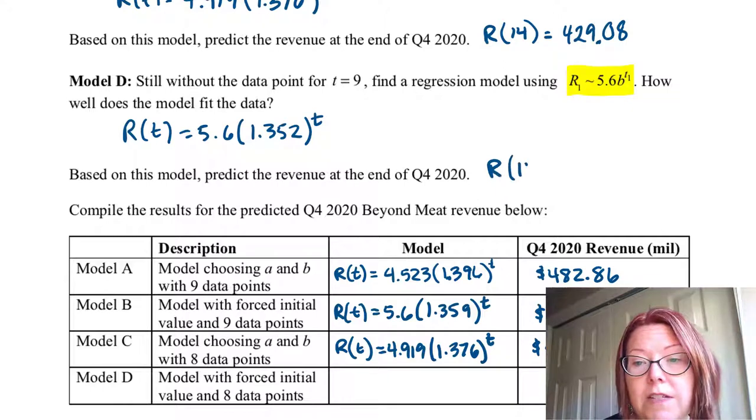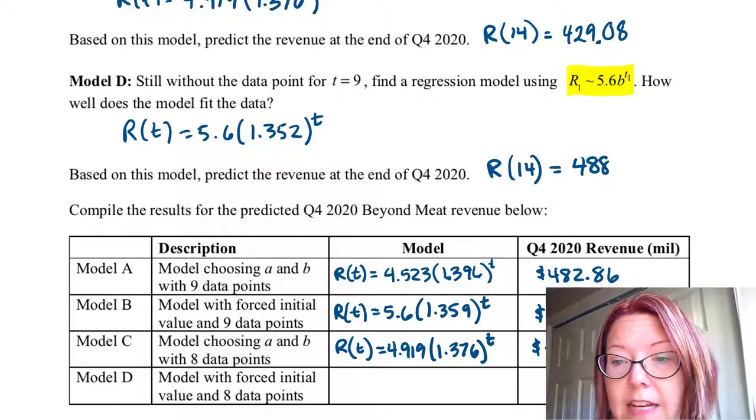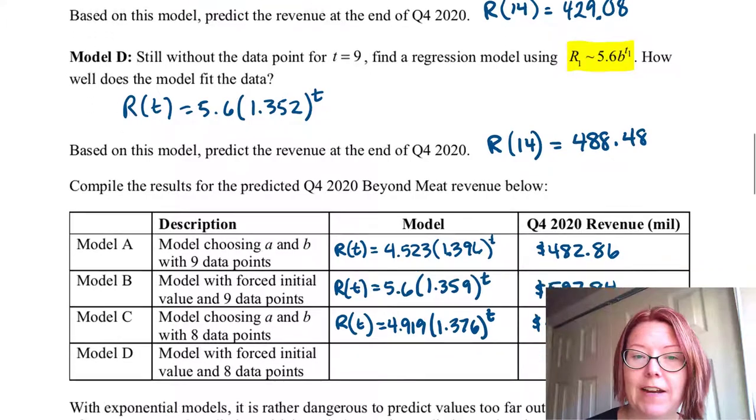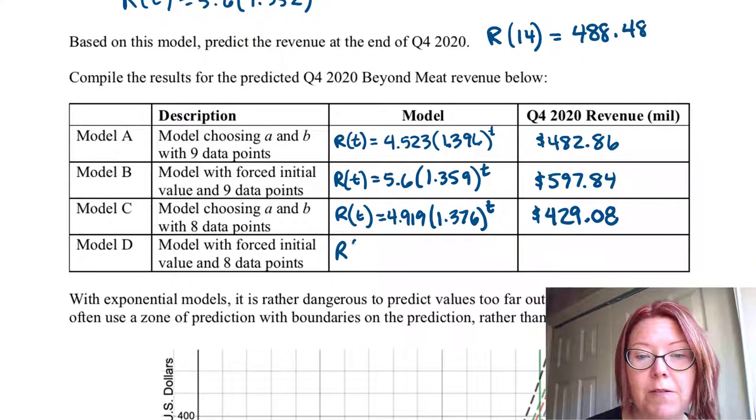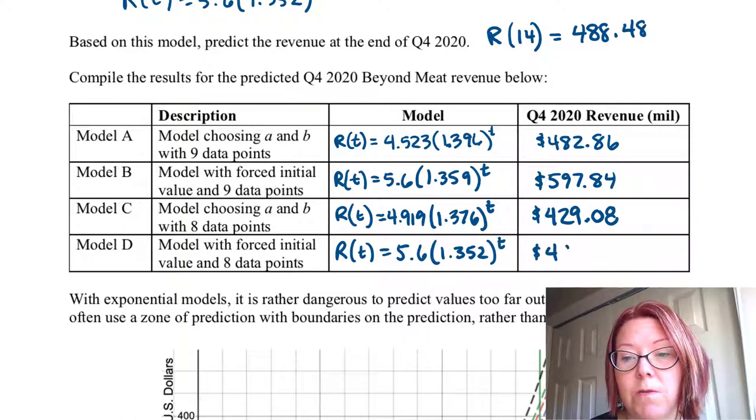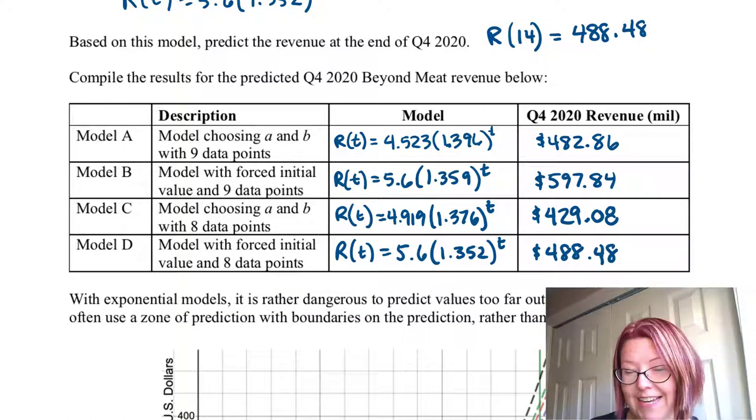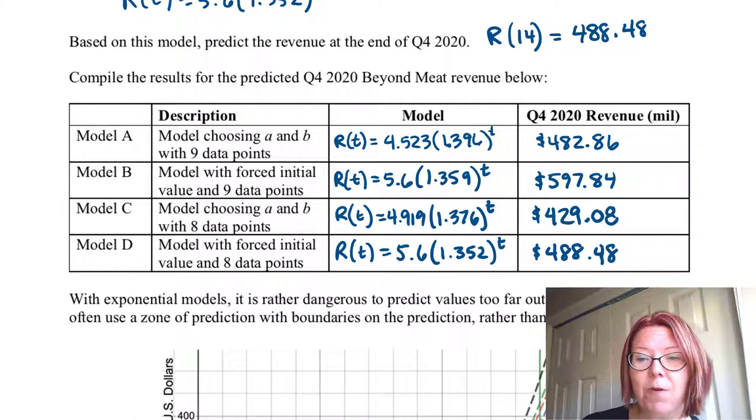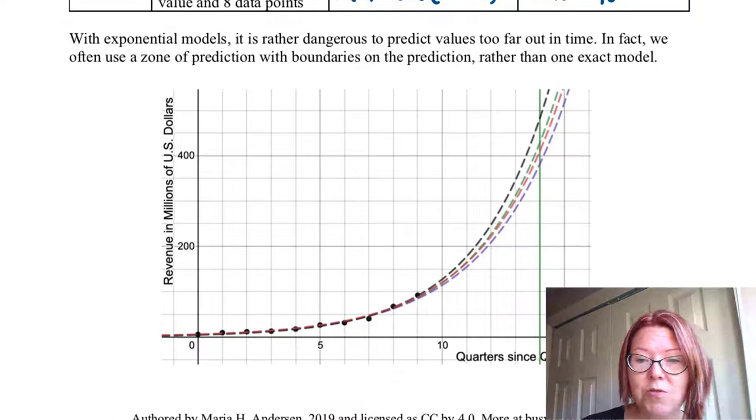And if we calculate R of 14 here we get 488.4792 or I'm just going to say 0.48. And so finally let's put that in our table. So our fourth model model D is R of t equals 5.6 left paren 1.352 right paren to the t. And it's giving us a result of 488.48 million. That's quite a variety of revenues that we have. Everything from 429 million dollars to 597 million dollars. That's quite a budget difference for the fourth quarter of 2020.